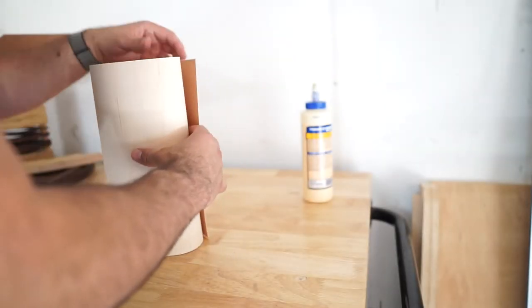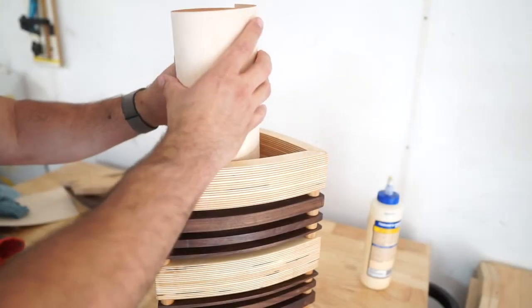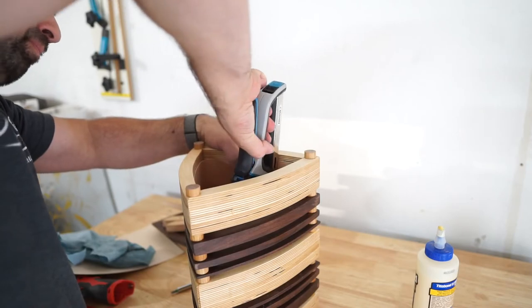Last I sized up and cut out a thin sheet of veneer for the inside of the lamp to help diffuse the light. Then I ran lighting and I was pretty much done.